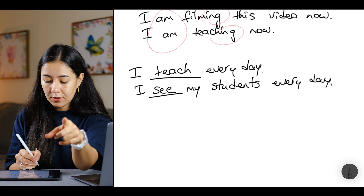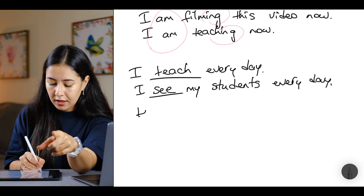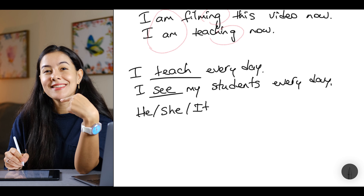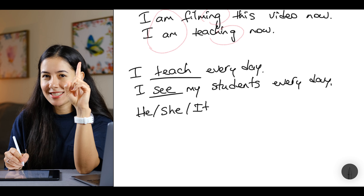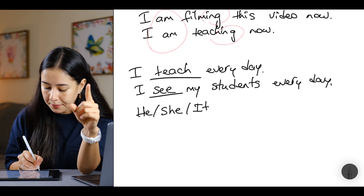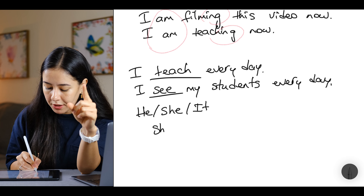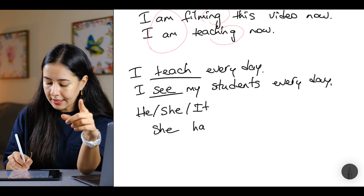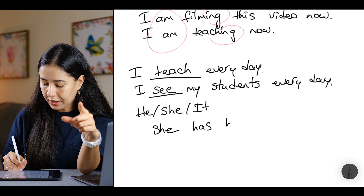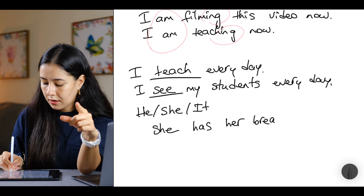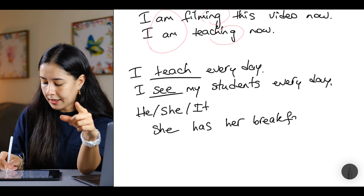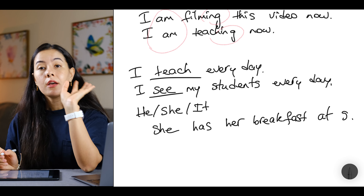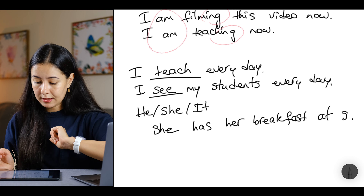Remember: with he, she, it — we add an 'S'. For example: she has her breakfast at nine. That was about present tense.